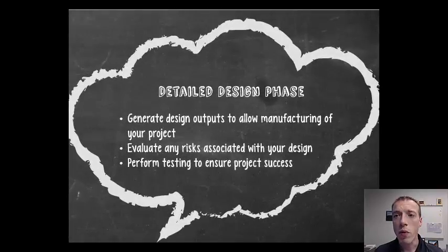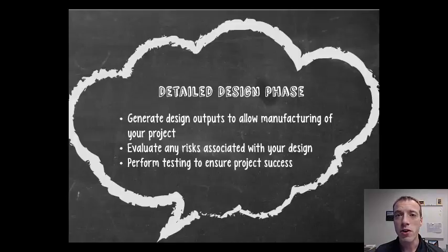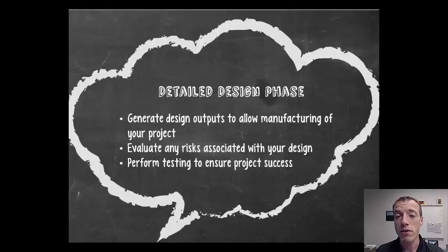Starting off with what the detailed design phase is all about: the detailed design phase is where you've already got a conceptual design or a loose idea of what you're going to do, and in this phase you generate design outputs that allow you to manufacture your end device or end project. Those outputs could include things like CAD models, prints, bills of material, routings, code for software or hardware, circuit schematics — any kind of detailed plan that would allow you to build the final product.